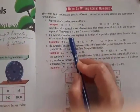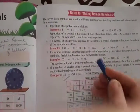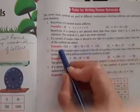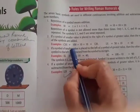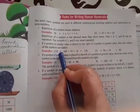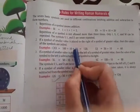Rule number two: if a symbol of smaller value is placed to the right of a symbol of greater value, then the values of the symbols are added. So 100 plus 10 plus 10, we'll add up and it forms 120.